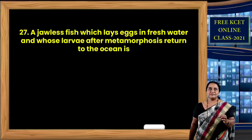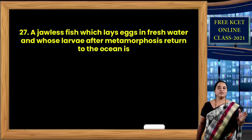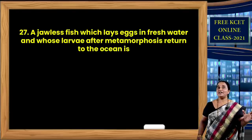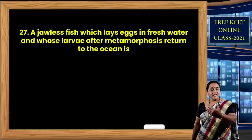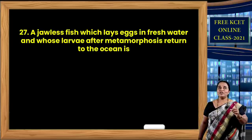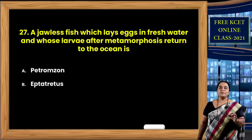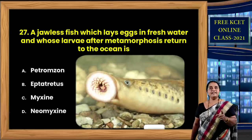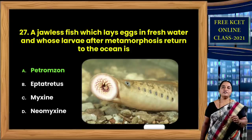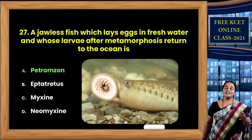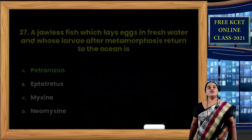Question 27: A jawless fish that lays eggs in fresh water, whose larvae after metamorphosis return to the ocean. These animals lay eggs in fresh water, eggs hatch into larvae, and larvae migrate back to marine waters. Out of four options, Petromyzon — commonly known as lamprey — is a jawless fish belonging to Agnatha, a subgroup under Vertebrata that fits this description.